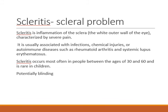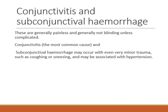Scleritis is a very painful condition and is potentially blinding. It is most commonly associated with other autoimmune systemic disorders like rheumatoid arthritis and systemic lupus. It can be seen in the age group of 30 to 60 years. It can be necrotic or non-necrotizing — again, a very potentially blinding condition.